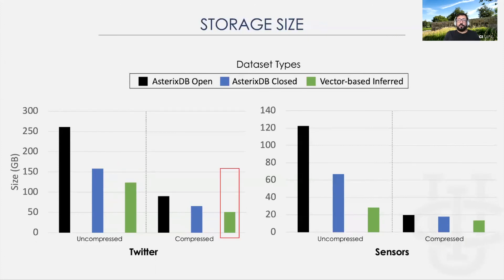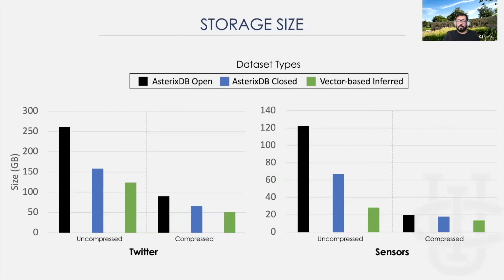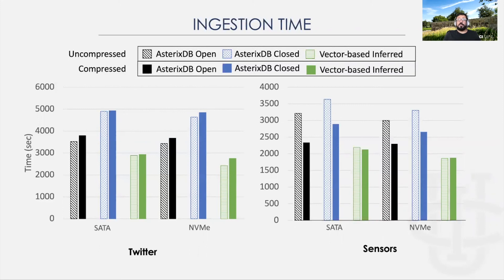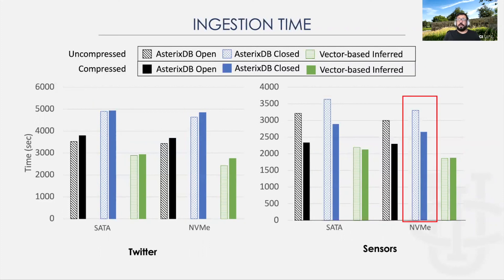As can be seen, the inferred dataset type has the smallest storage overhead compared to the other two, and even after compression, the inferred dataset type has the smallest storage overhead. This is because the vector-based format is smaller in size when compared to S6DB's original recursive structure of the open and closed types. To measure the impact of the Tuple Compactor on ingestion, we see that it did not negatively impact the ingestion time. In fact, the ingestion time was improved, because the vector-based format is more efficient to construct compared to the recursive structure of S6DB. The closed dataset type took more time to enforce the constraints of the declared fields, such as checking for missing non-nullable fields.